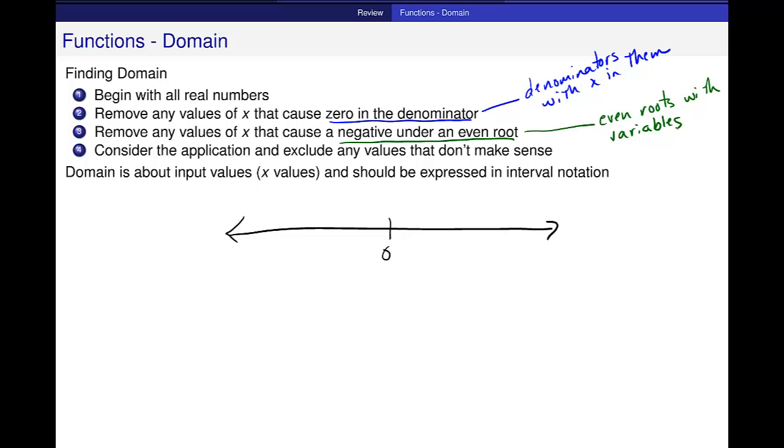And then the fourth item is to consider, especially if you're talking about word problems or application problems, consider the context that you're talking about, and exclude any values that don't make sense within that context. A lot of times, for example, if you're talking about a geometry problem, you're trying to find the length of the sides of a rectangle, the sides of a rectangle can't be negative. So you would exclude those.